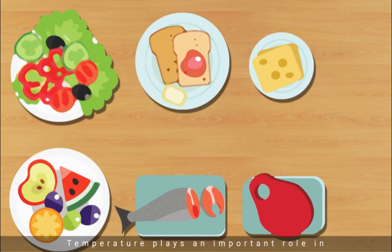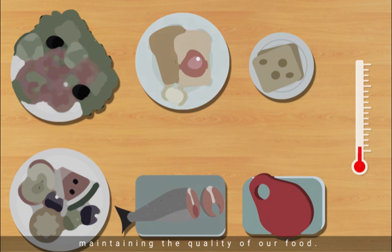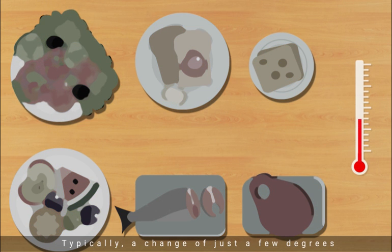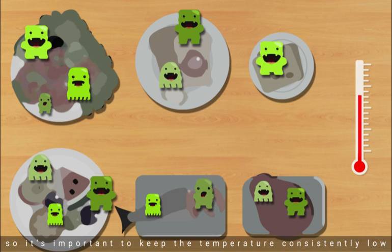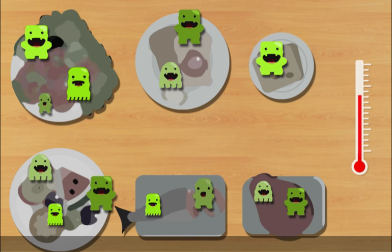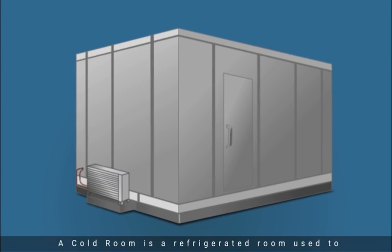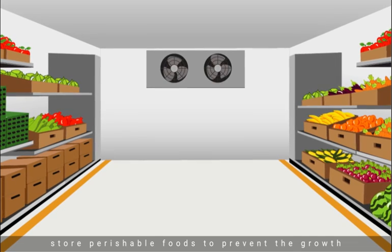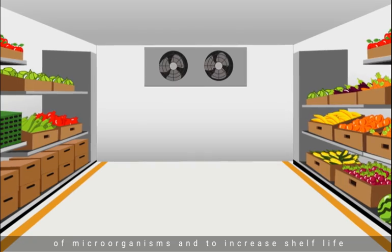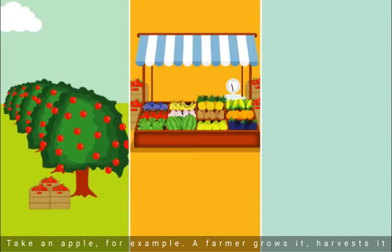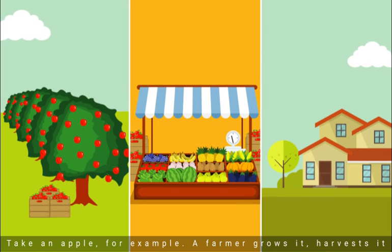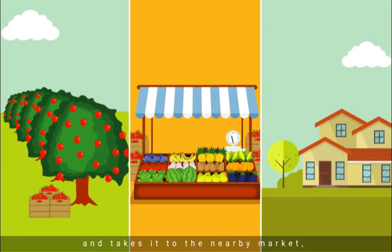Temperature plays an important role in maintaining the quality of our food. Typically, a change of just a few degrees can make a big difference in the growth rate of harmful microorganisms, so it's important to keep the temperature consistently low. A cold room is a refrigerated room used to store perishable foods to prevent the growth of microorganisms and to increase shelf life.